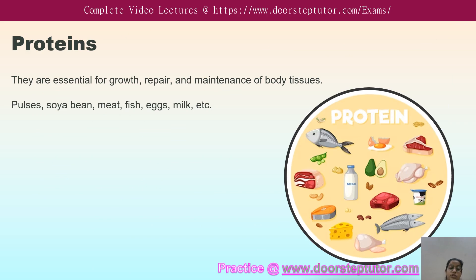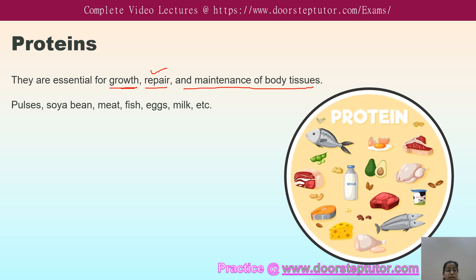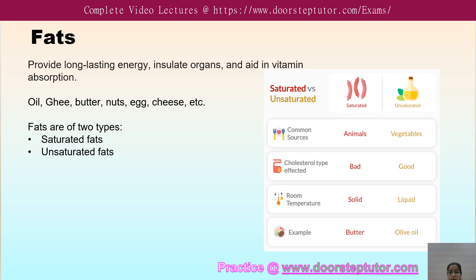Proteins are essential for the growth, repair, and maintenance of body tissue. Bodybuilders eat a lot of protein because it helps repair muscles after a workout. In everyday life, we also need proteins for the maintenance, growth, and repair of body tissues. You find proteins in pulses, soya bean, meat, fish, eggs, milk, cheese, and yogurt.